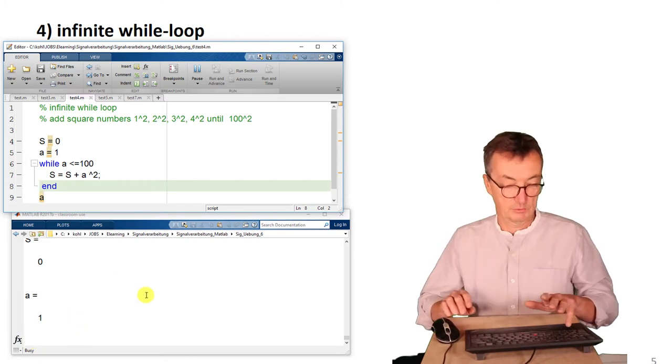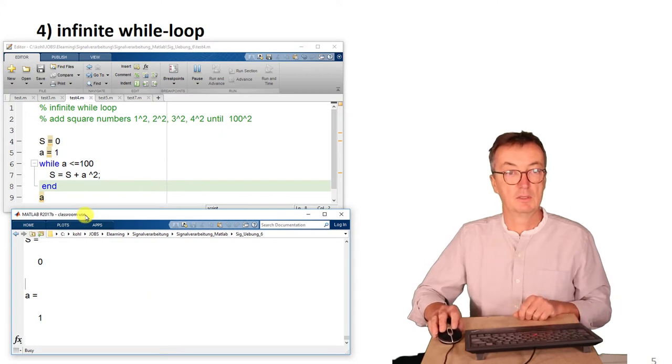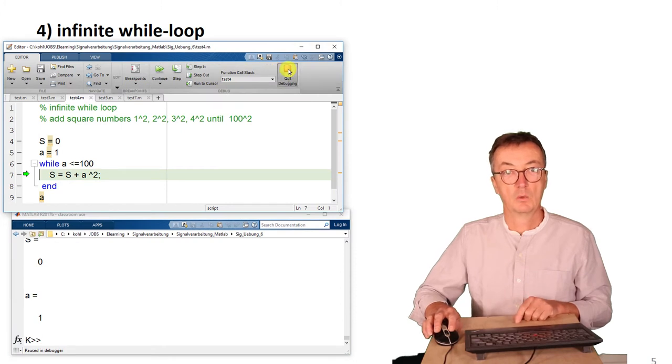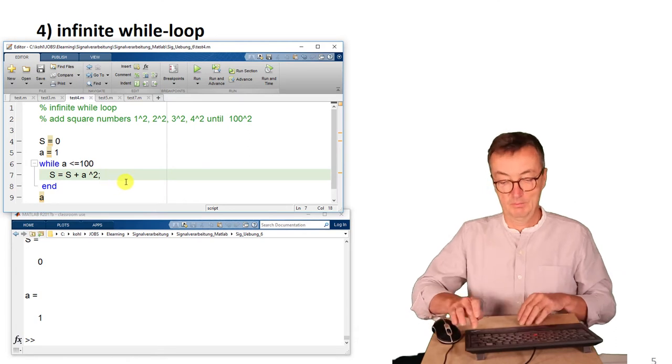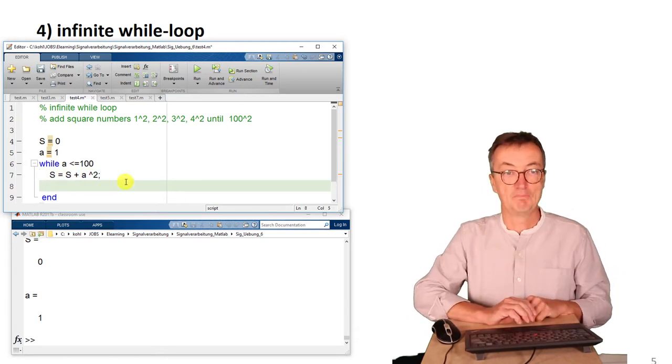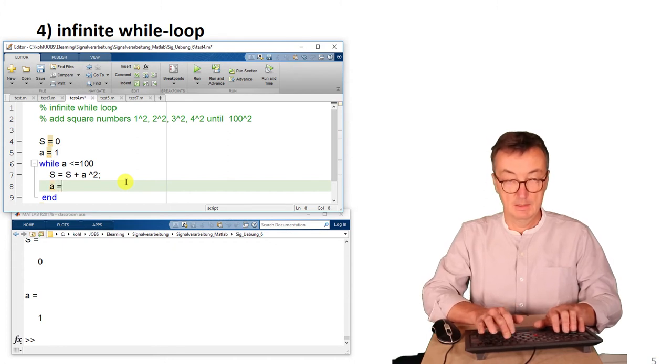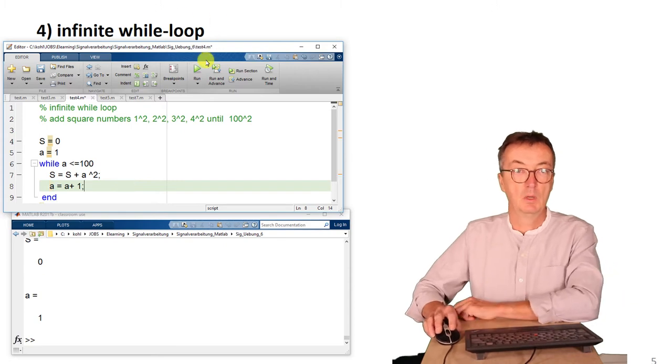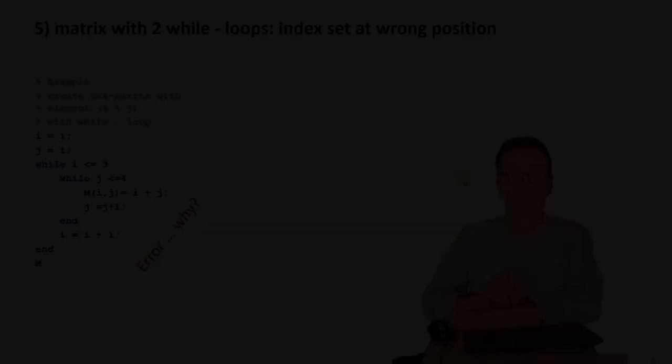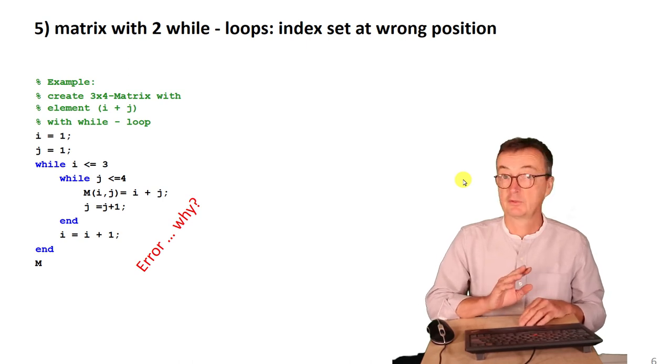So we need to stop that either by pressing Ctrl C when the mouse is in this command window or pressing the pause followed by the quit button. Obviously, there needs to be something to be changed. A needs to be increased in the loop and the thing is running. This problem here occurs always with while-loops. It's quite common.